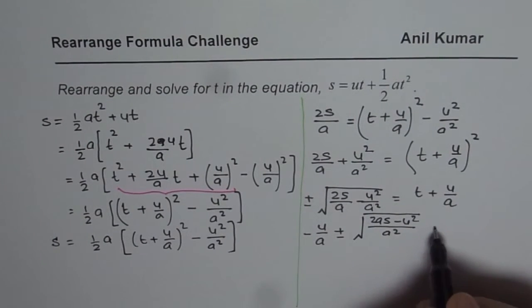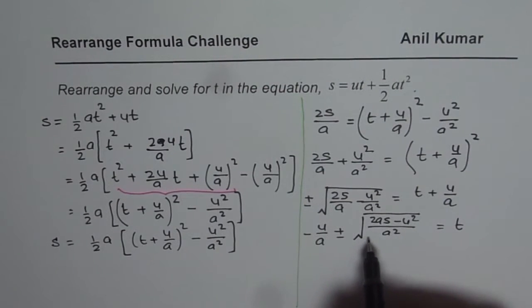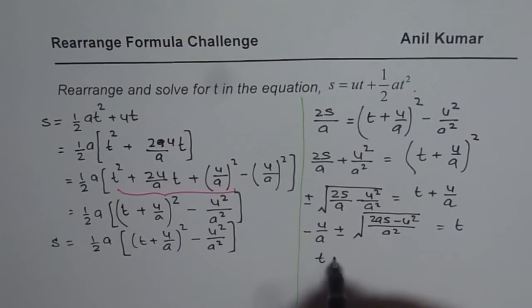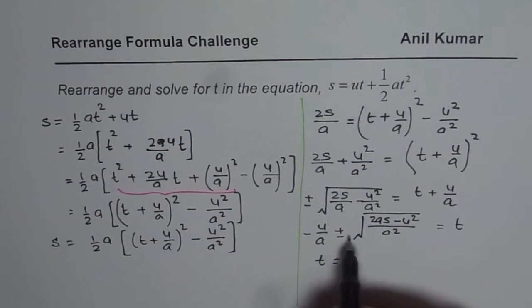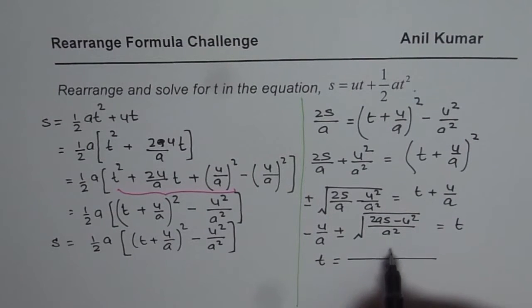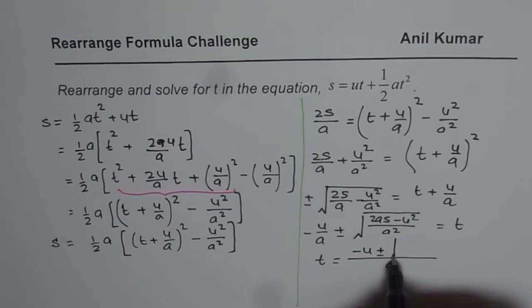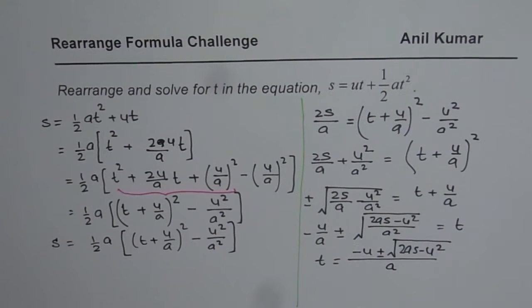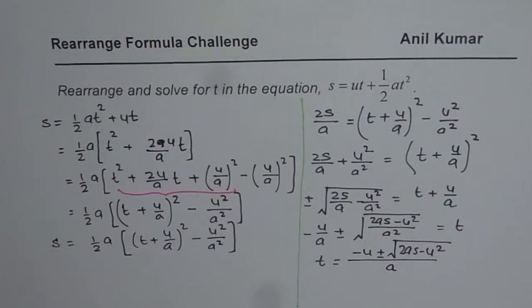So this is the kind of term we get for t, which could be further simplified. And you could write this as t equals, so if I bring out a square from the square root, I get 1 over a. And I have 1 over a here also. So I could write a in the denominator. And this would be minus u plus minus square root of 2as minus u square. So that is the formula which we get for t by rearranging the given equation. So that is how it should be done.